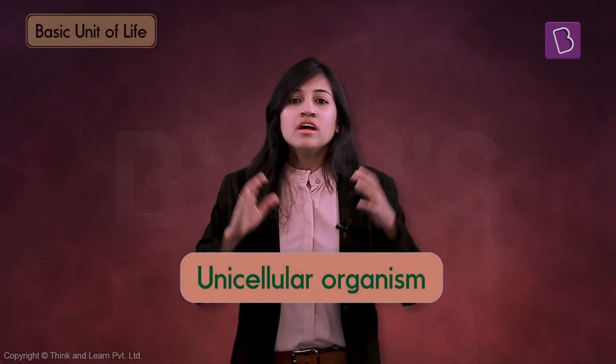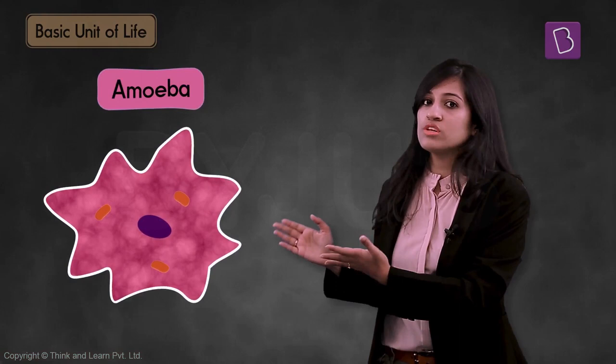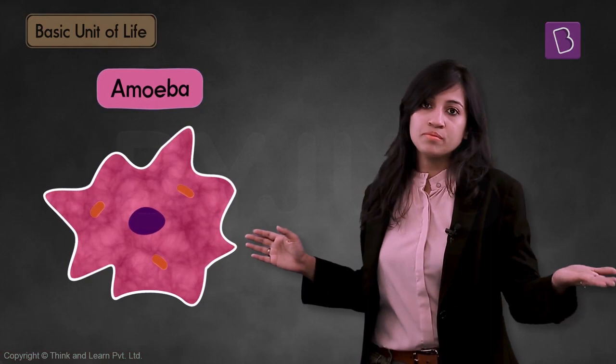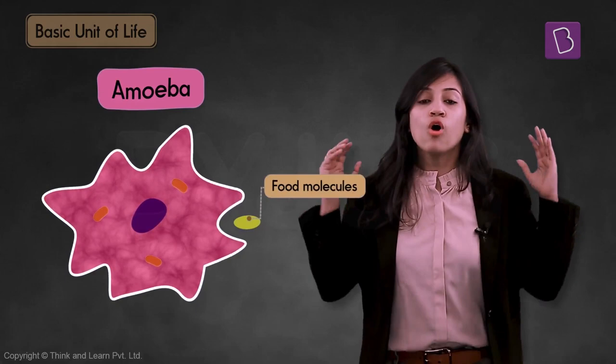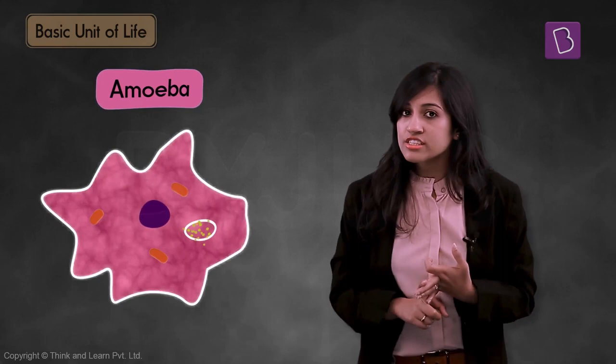Take an amoeba for example. Amoeba is not the smallest living organism — I'll tell you who that is pretty soon — but amoeba serves as a good example because it's a unicellular organism. This single-celled organism performs all functions of life on its own: it consumes food, it digests the food, then it utilizes the food for its energy, and finally it ejects the undigested food out of the body.